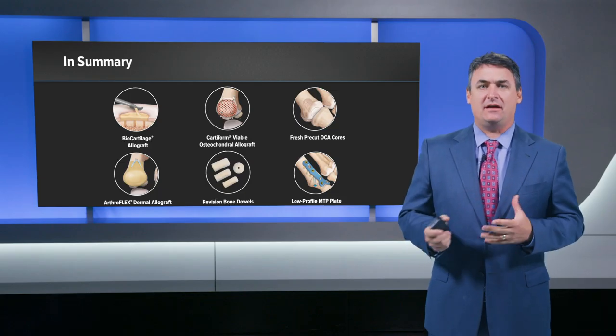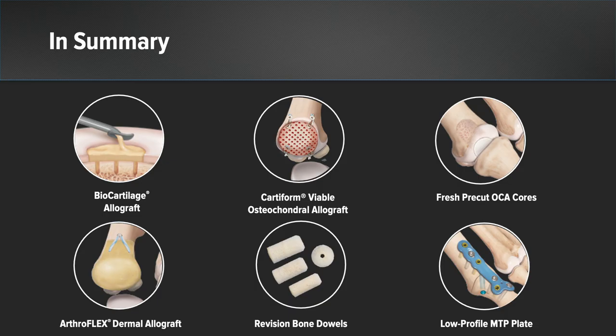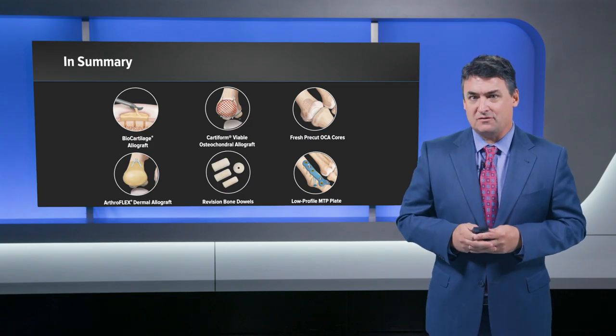In summary, we have many options for first MTP joint disease: biocartilage, Cartiform for larger osteochondral defects, fresh-cut cartilage core, Arthroflex to cover the first MTP joint and maintain range of motion, pre-cut bone dowels to maintain length, and the first MTP fusion plate and screw system as one of the workhorses. Thank you very much for your attention.